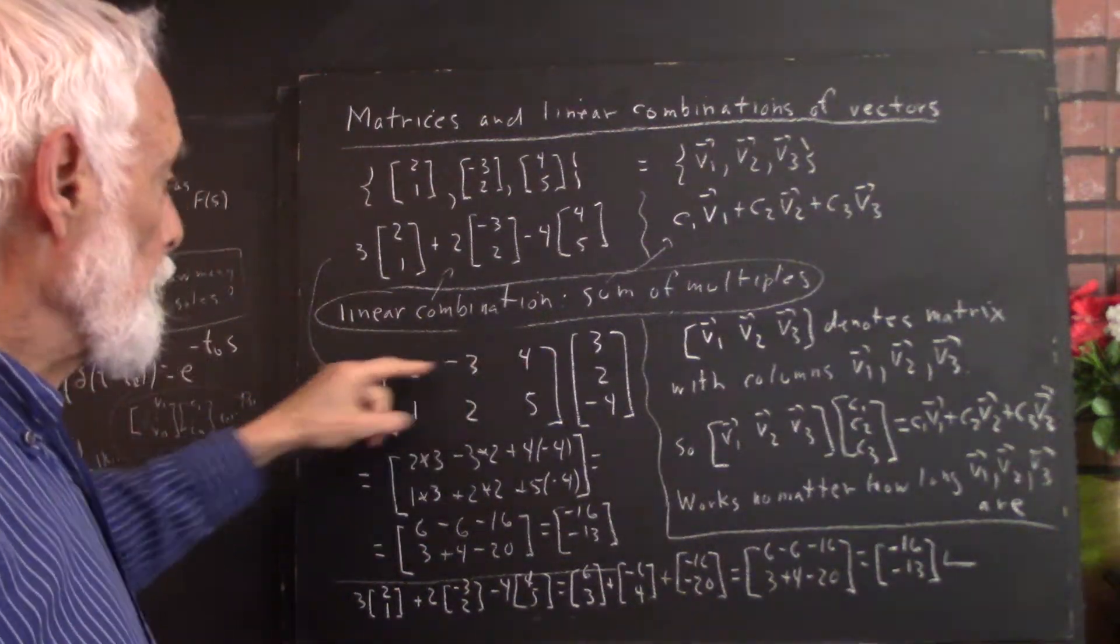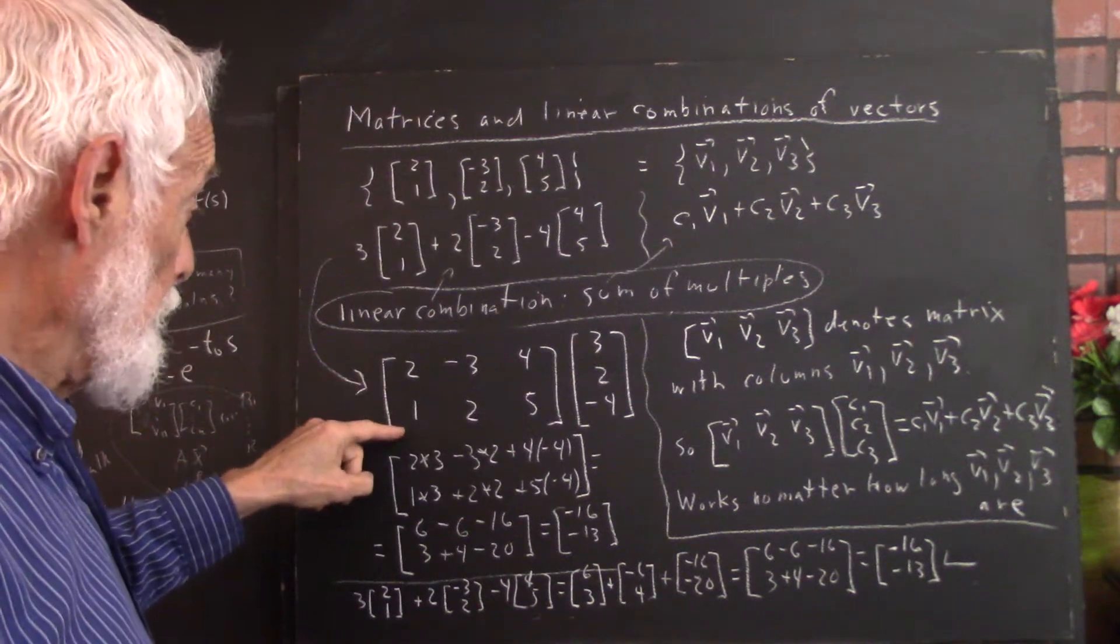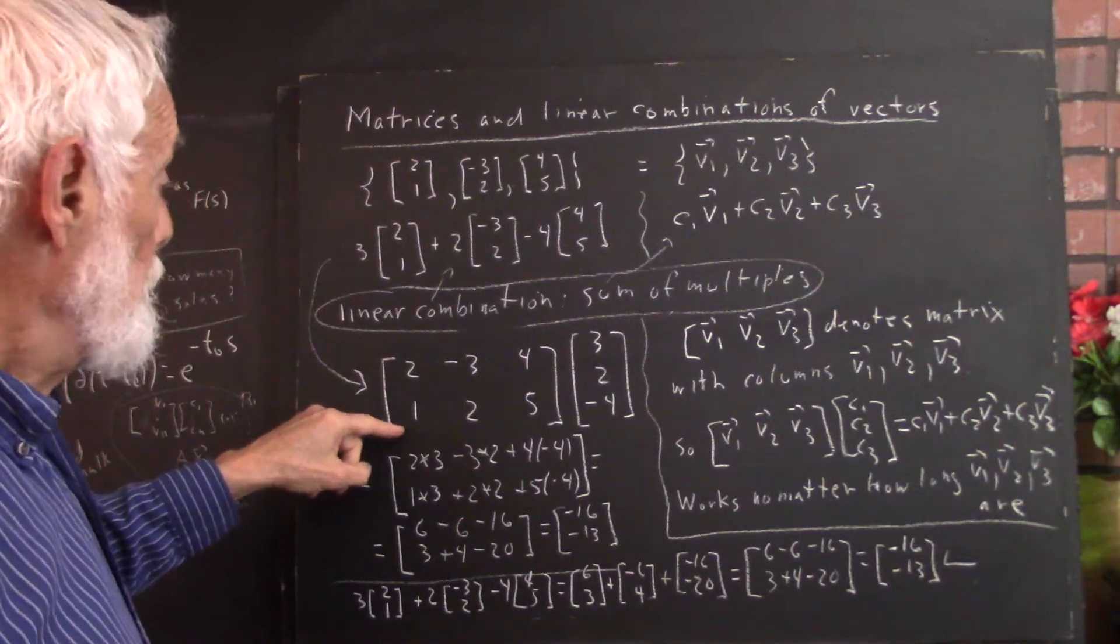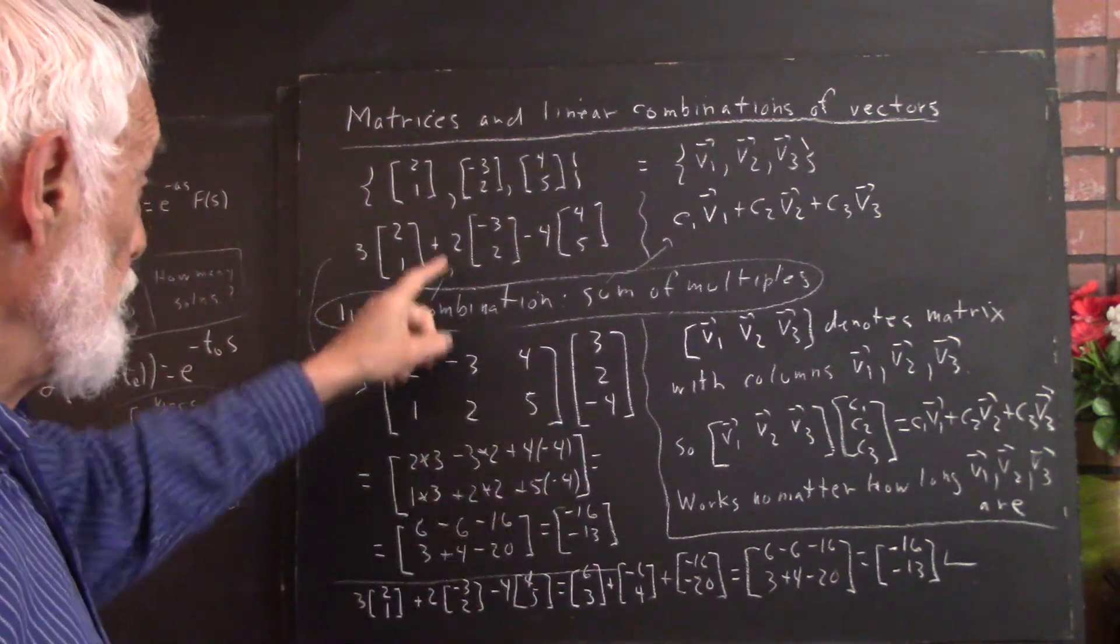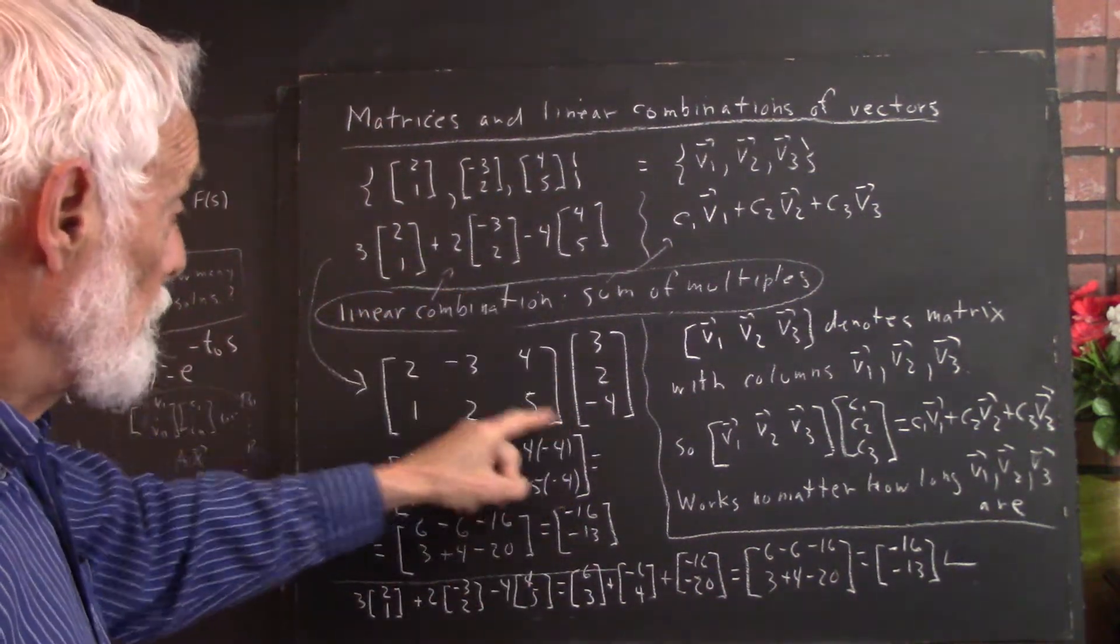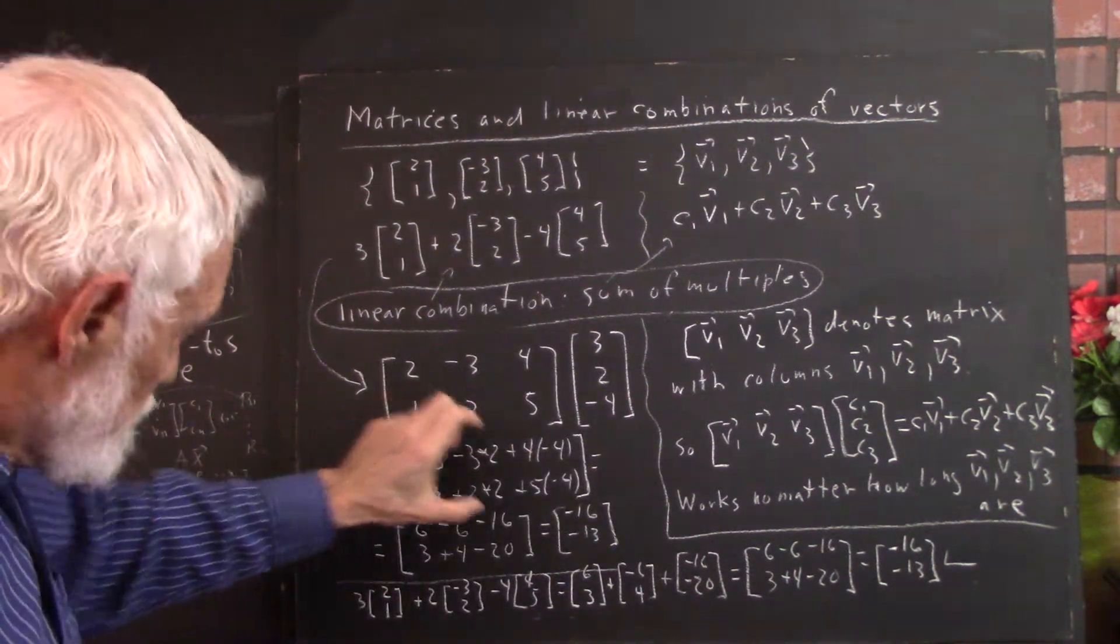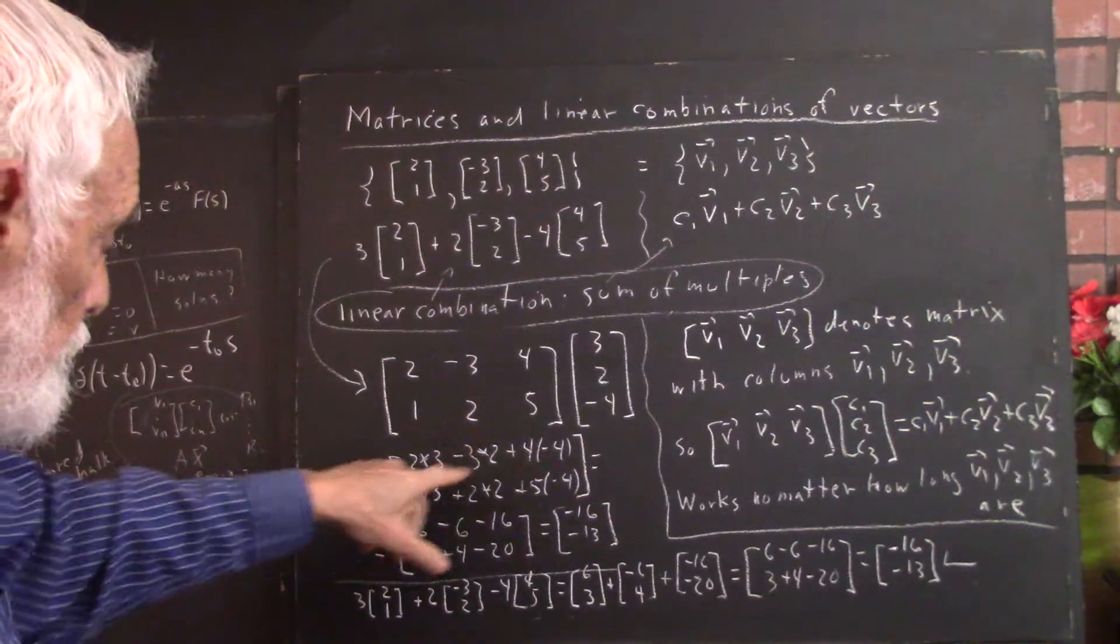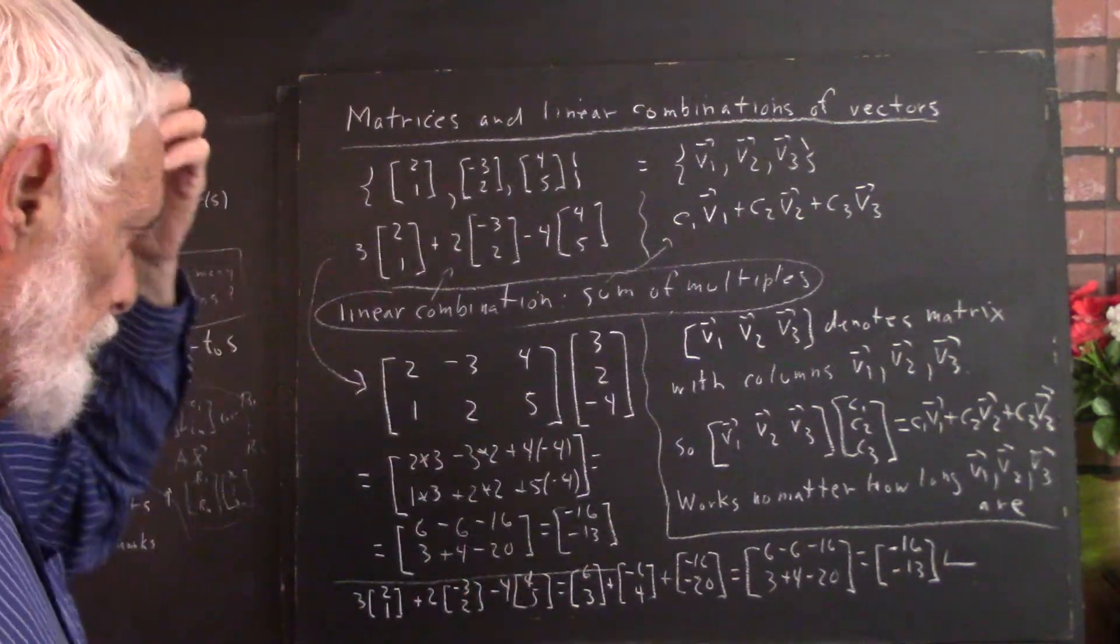When we multiply the first row by the column, we multiply the 2 by the 3. When we multiply the second row by the column, we multiply the 1 by the 3. Similarly, the negative 3 and 2 will get multiplied by 2, and negative 4 will multiply the vector 4, 5. We write out the sum, don't have to read that to you, and do the calculation, and we get the result.